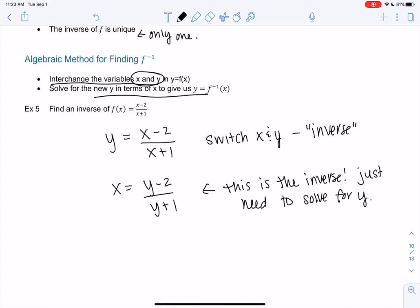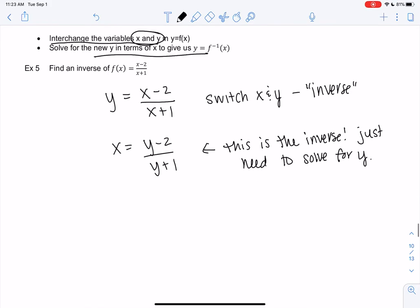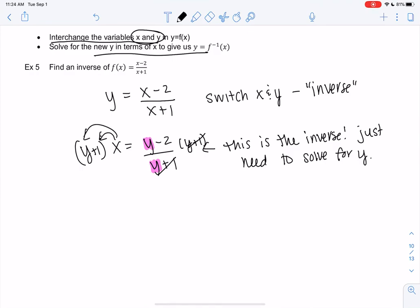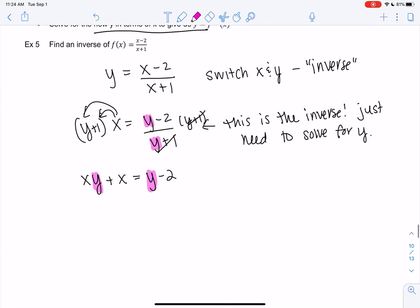This will be good algebra review. We need to solve for y. It's super ugly because y is on top and bottom. I'm going to get rid of the denominator by multiplying both sides by y plus 1. Make sure it's in parentheses. We get xy plus x on the right side equals y minus 2. I'm still solving for y, so I'm going to move everything with y to the left side and everything without y to the right side.